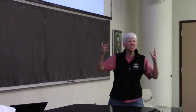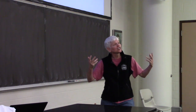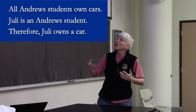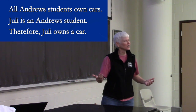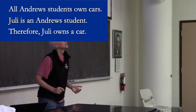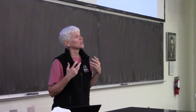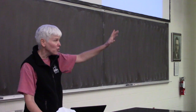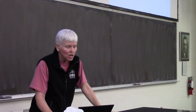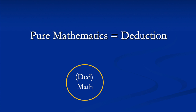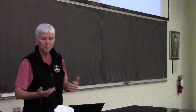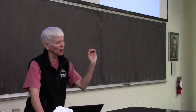The simplest way to know something is through deductive reasoning — from the general to the specific. Here's a syllogism: all Andrews University students own cars; Julie is an Andrews University student; therefore Julie owns a car. That's deduction. Pure mathematics is actually just the deductive method.